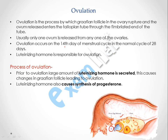Ovulation occurs on the 14th day of the menstrual cycle in a normal cycle of 28 days. On the 14th day, ovulation occurs and usually one ovum is released from one of the ovaries — either left or right. This cycle occurs every month, so each month either of the ovaries releases the ovum.